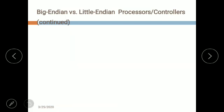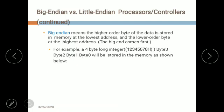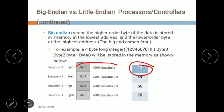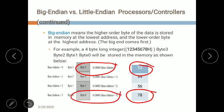In big endian, the higher-order byte of data is stored in memory at the lowest address and the lower-order byte is at the highest address. Using the same number — the most significant byte 0x12 is stored at the lowest address, whereas the lower-order byte is stored at the highest address — exactly the reverse of little endian. Motorola series processors follow this big endian data formatting.